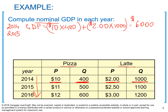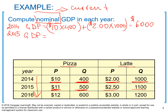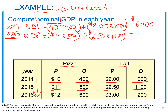For year 2015, we take prices and quantities for year 2015. The price of pizza was $11 and we produced 500 pizzas. The price of latte was $2.50 and we produced 1,100 lattes. So our nominal GDP for year 2015 is $8,250. GDP has actually increased from year 2014 to 2015.